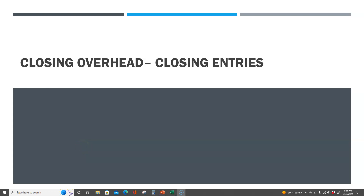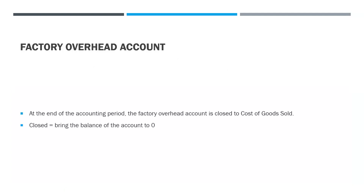In this video, we're going to be looking at how to close the factory overhead account. At the end of an accounting period, the factory overhead account is closed to the cost of goods sold account. From financial accounting, you know that closing means bringing the balance of the account to zero, so we are going to bring the factory overhead account to zero at the end of every accounting period.